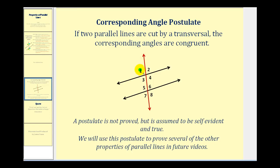So that means angle one is congruent to angle five, angle two is congruent to angle six, angle three is congruent to angle seven, and angle four is congruent to angle eight. And hopefully this does make sense — if these two parallel lines are slanted in the same direction, then if a line were to cut those two, the corresponding angles that would be formed would be congruent. We'll go ahead and stop here. I hope you found this helpful.